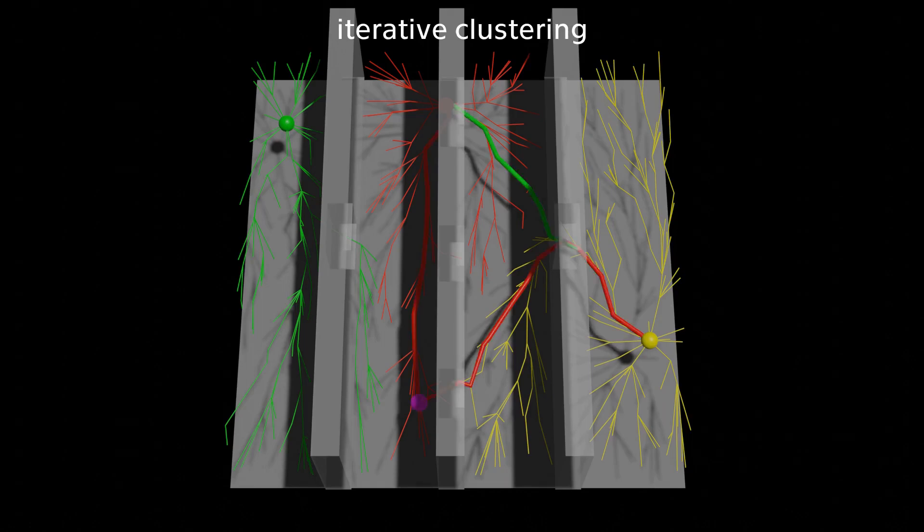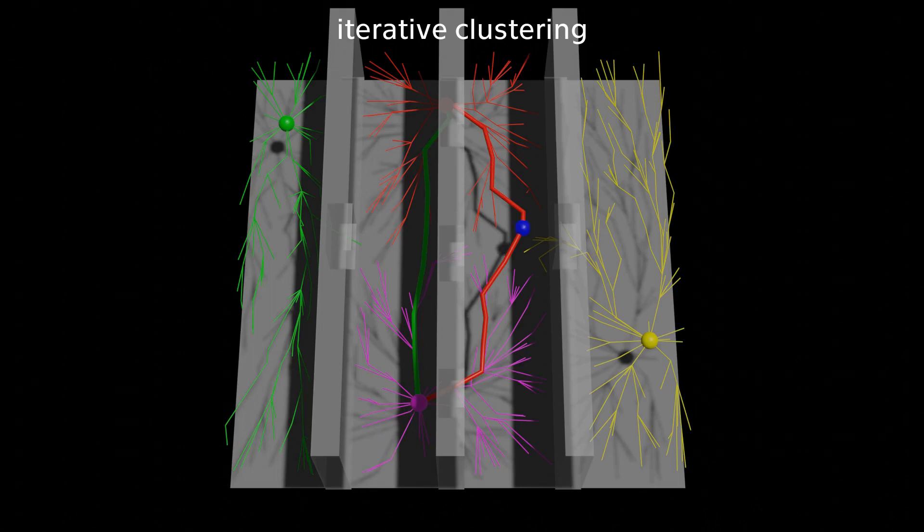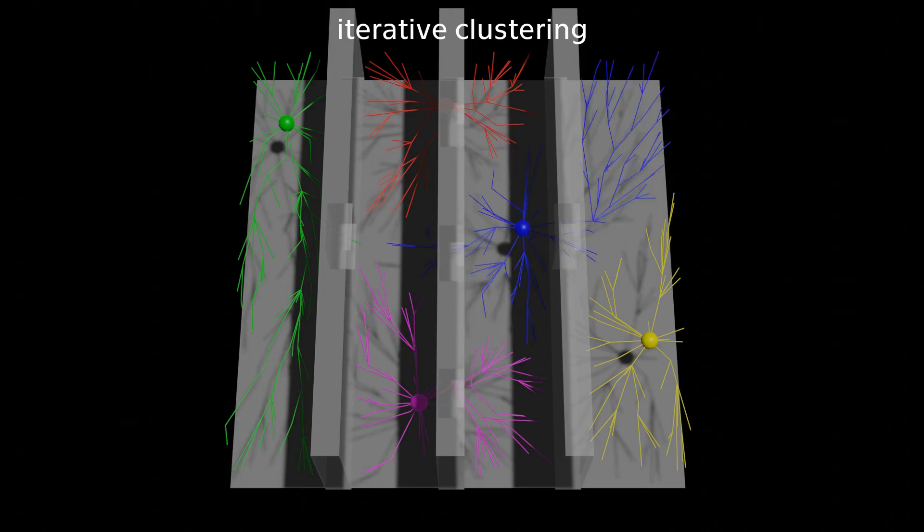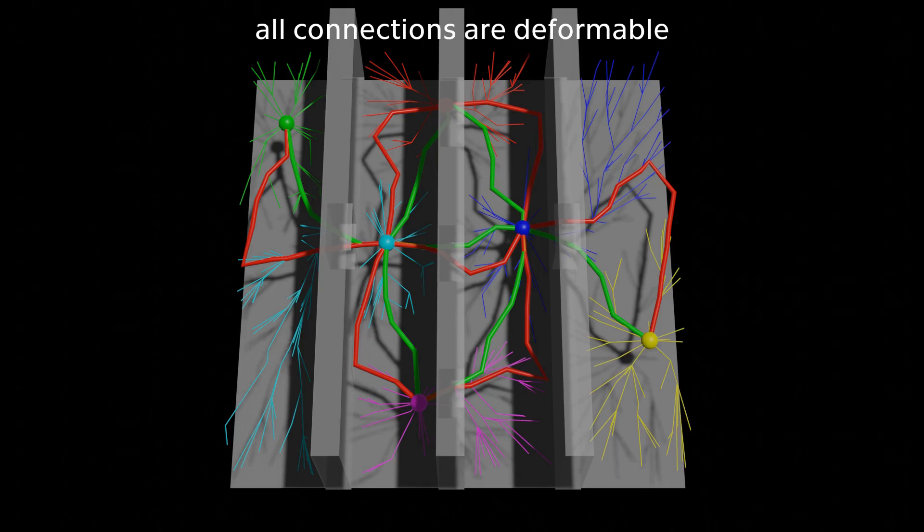This process is iteratively repeated, creating new centroids at non-deformable connections with highest ratio of lengths between longest and shortest path. Clustering ends once all neighboring clusters have deformable connections or a predefined maximum number of clusters is reached.